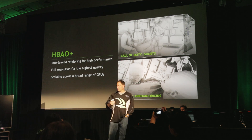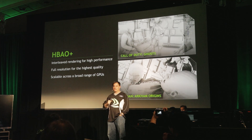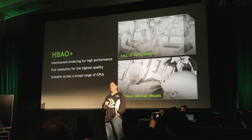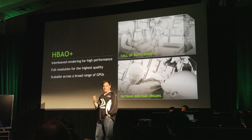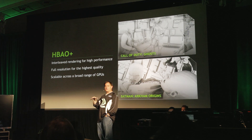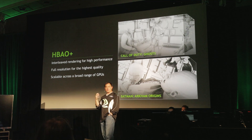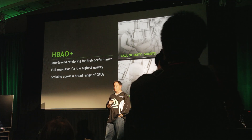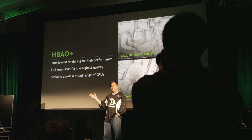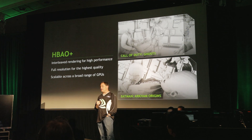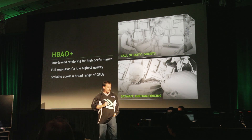One other technique we use for ambient occlusion is called Horizon-Based Ambient Occlusion, or HBAO. This is a technique for doing real-time detailed shadows as a form of ambient occlusion. It's been integrated into a huge number of games. It's a highly optimized library for doing AO, and it scales across a wide range of GPUs — it runs on NVIDIA, it runs on AMD — and it's a fundamental building block for doing lighting in games.